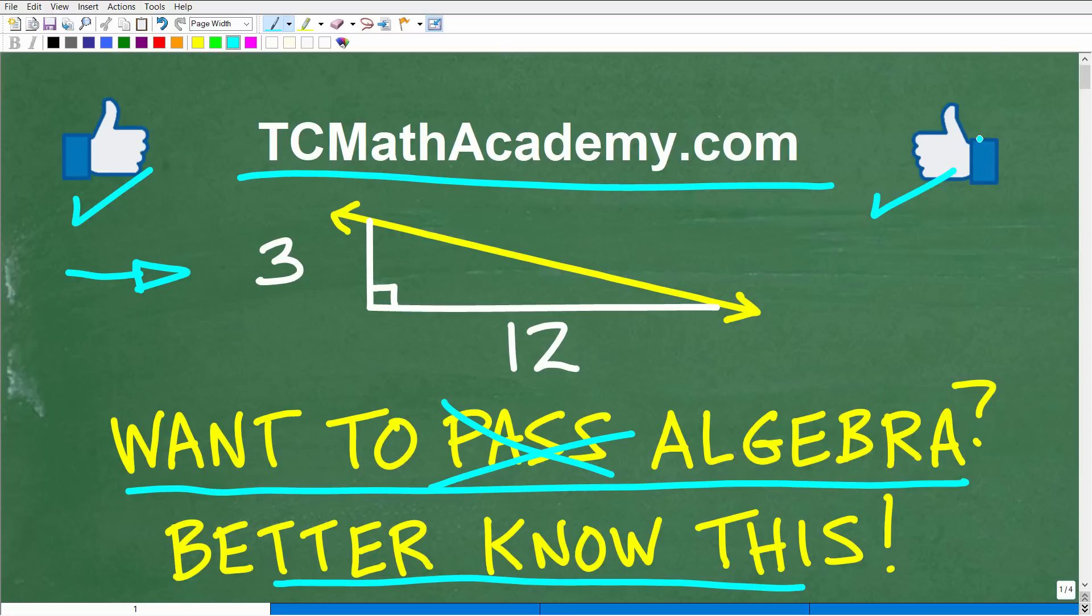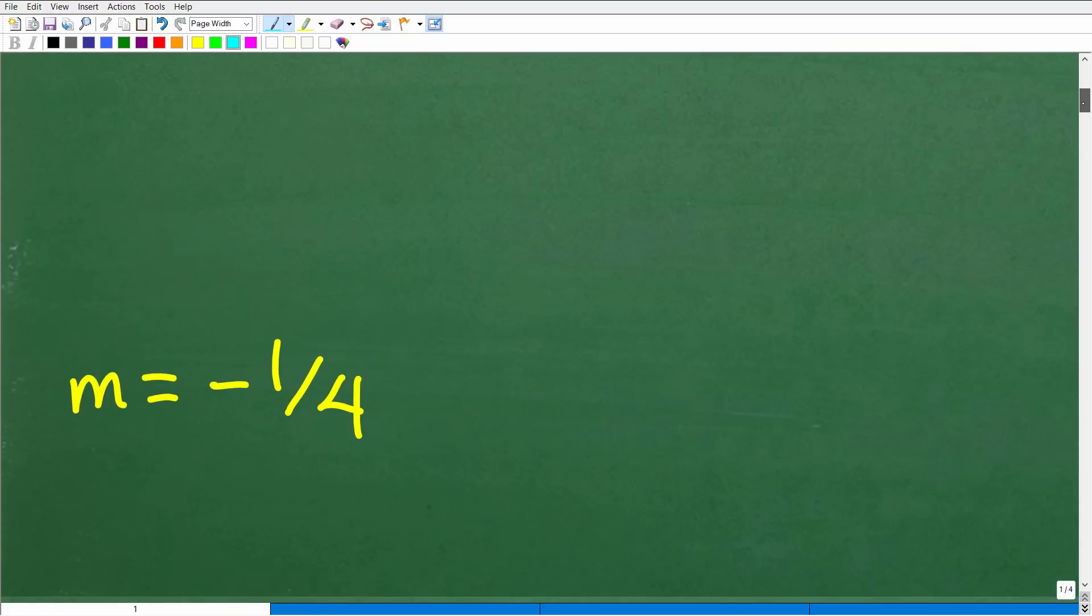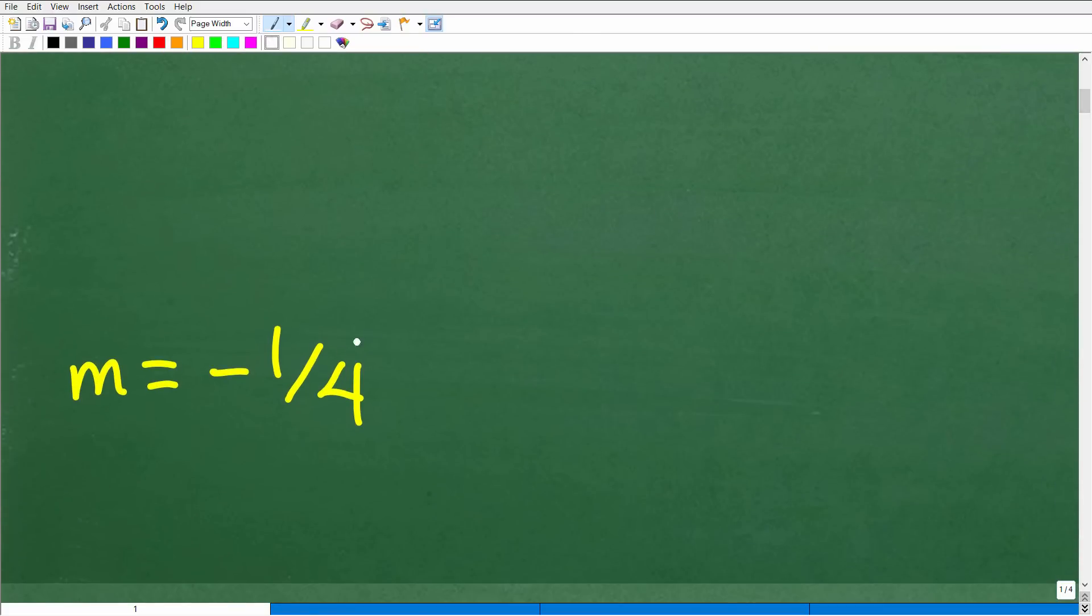Okay, so again, I'm looking for the slope of this line given this information. Let's go ahead and take a look at the answer right now. And here is the answer, negative one-fourth.